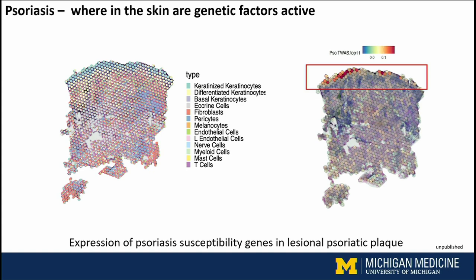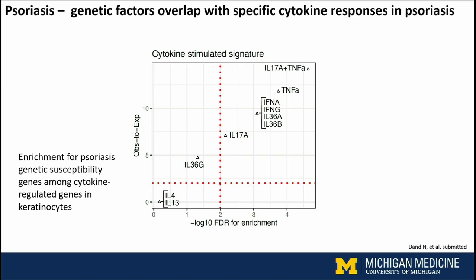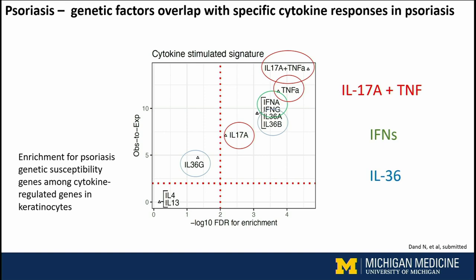One thing we've done is look at cytokine responses — not the cytokines themselves, but what they actually turn on in skin cells. We know that psoriasis is a cytokine-driven disease, as most effective drugs are anti-cytokine treatments. Looking at both the log10 significance for enrichment and the observed-to-expected ratio, you find what you would expect up in the right upper corner: IL-17A, TNF signal, both type 1 and type 2 interferons, and IL-36 responses — mapping onto the cytokines long known to be involved in psoriasis, co-localizing with these genetic signals.